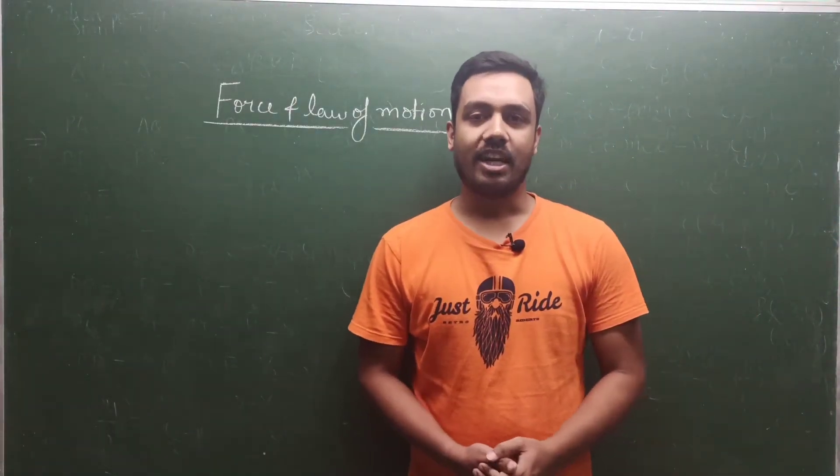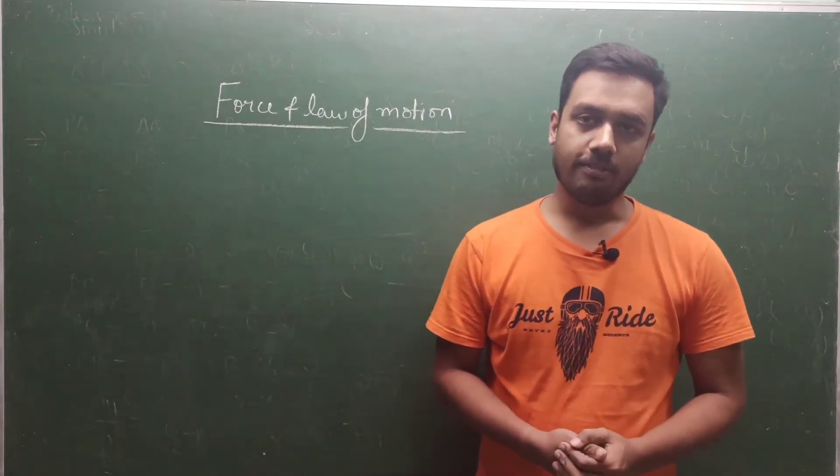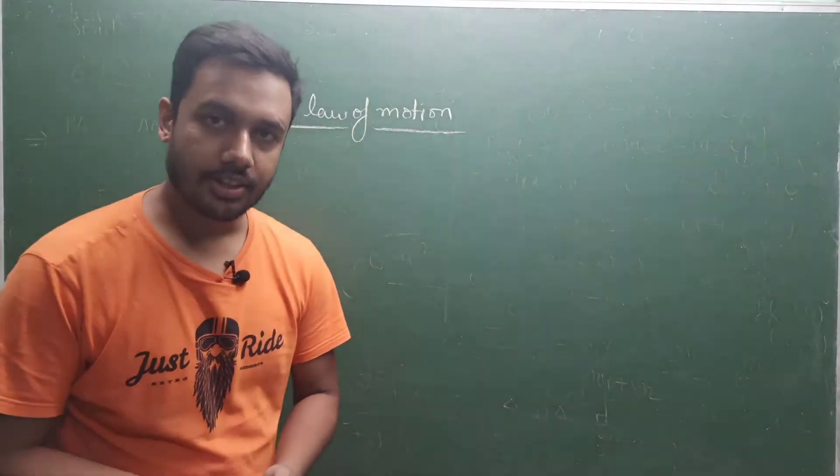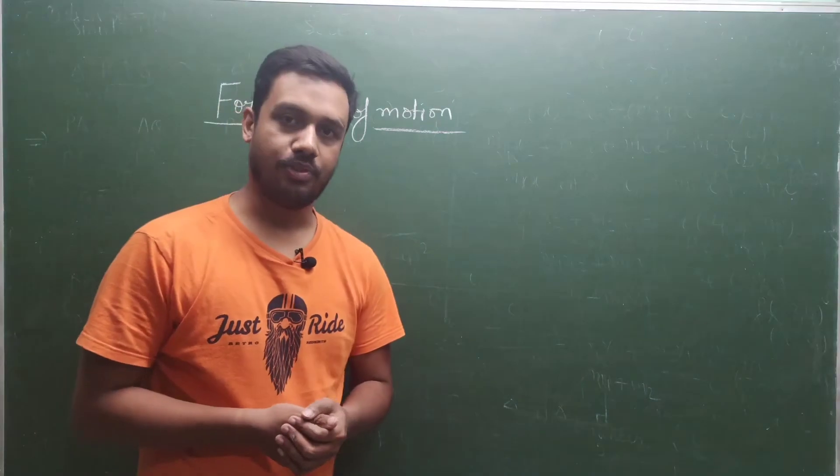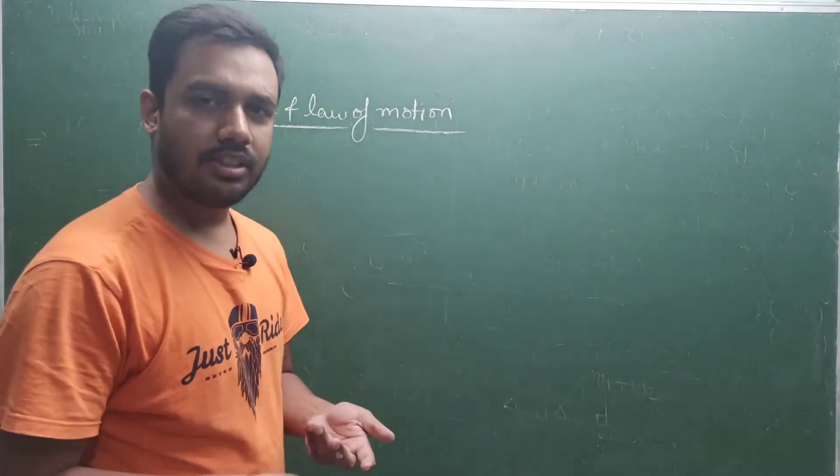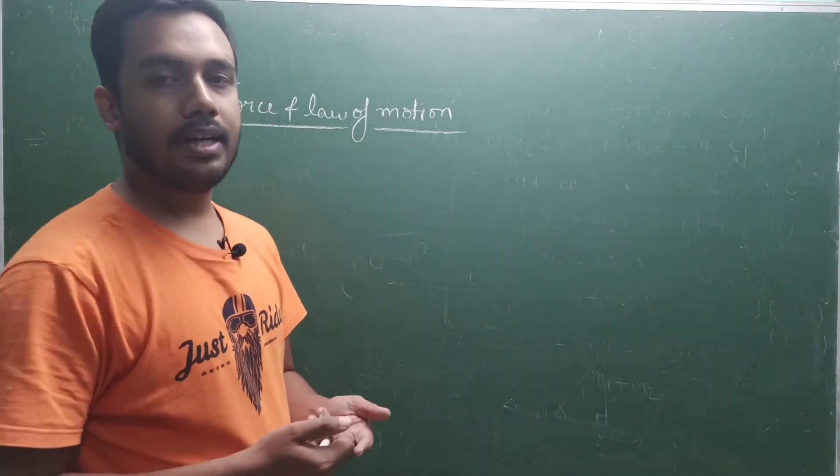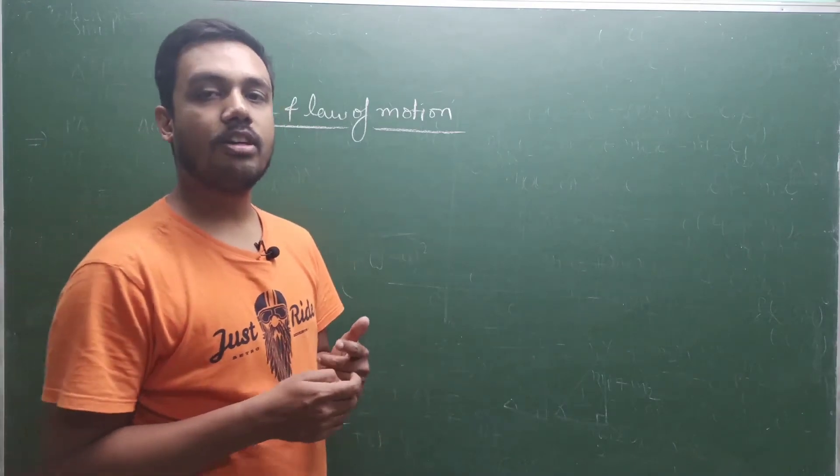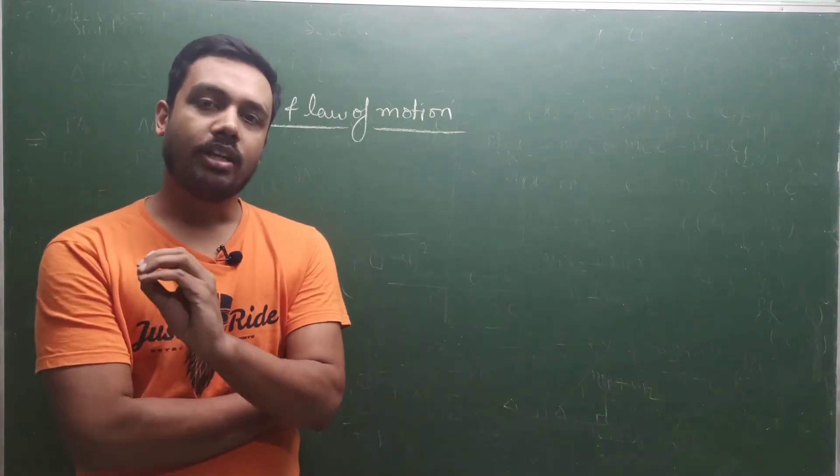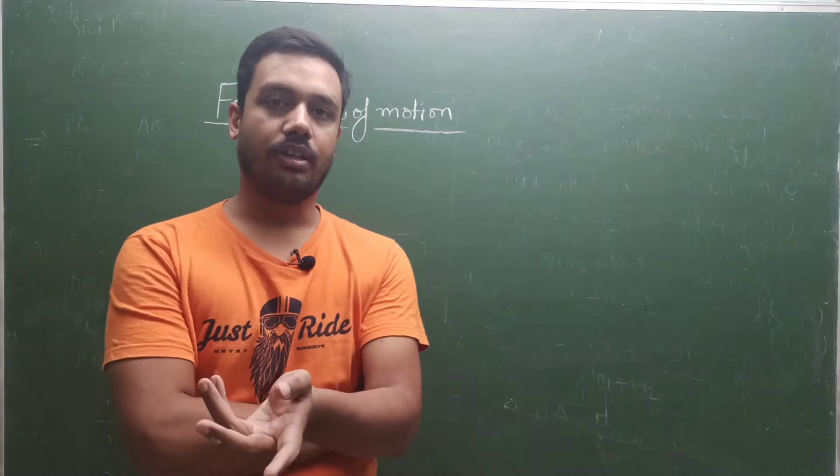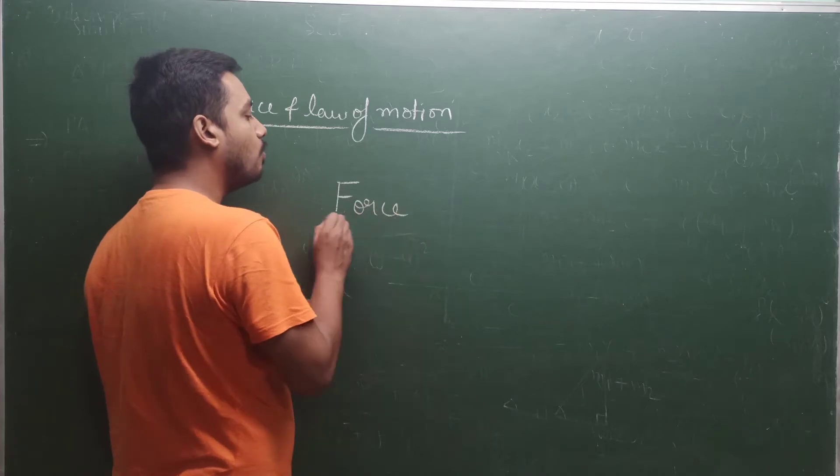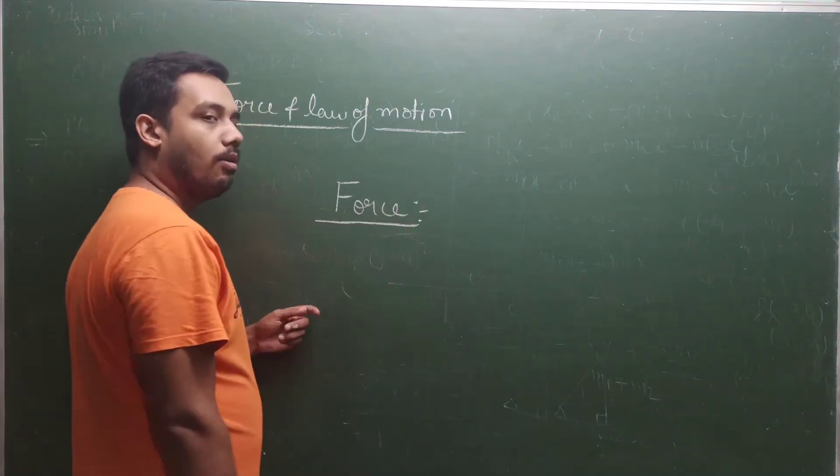Hello students, now we will read chapter number nine, that is Force and Laws of Motion. In the previous chapter we read about acceleration. What does acceleration do? It changes the velocity of the object. We have learned that velocity changes, but we have never taught which factor is responsible for changing the velocity. So in this chapter we will read about the cause of velocity change.